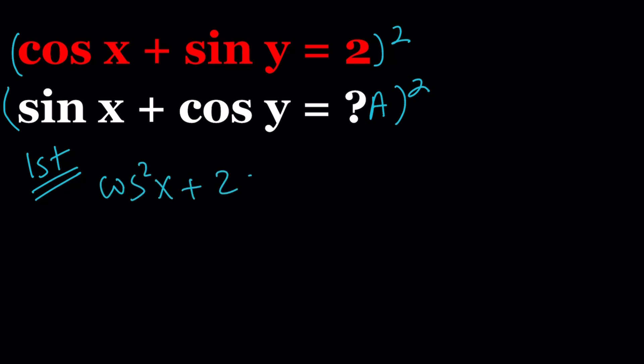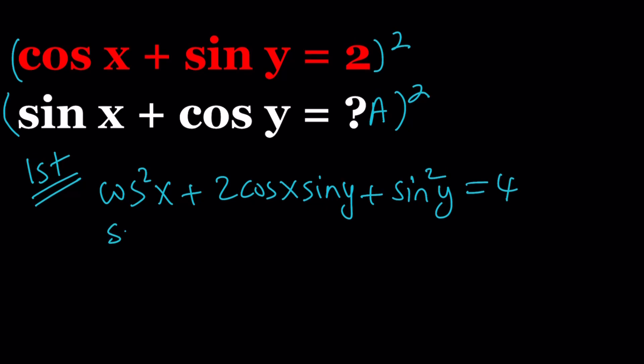Cosine squared x plus 2 cosine x times sine y plus sine squared y equals 4. And from the second equation, if we square both sides like a plus b, we get sine squared x plus 2 sine x cosine y, the 2ab in the middle, plus cosine squared y equals a squared.